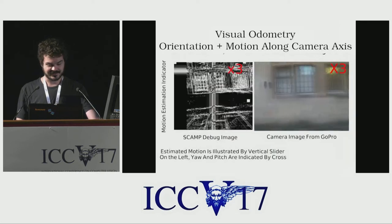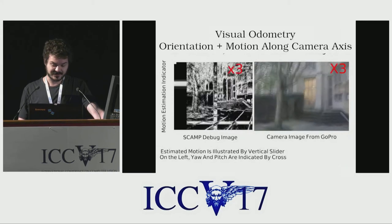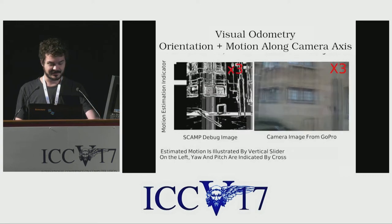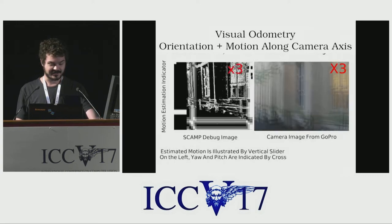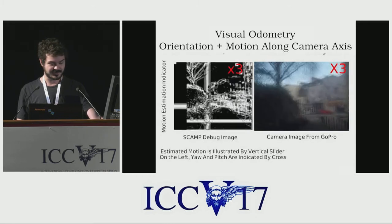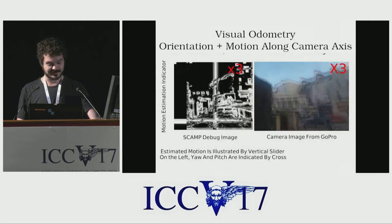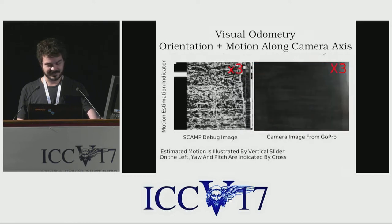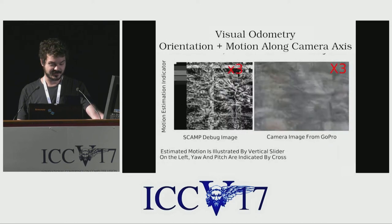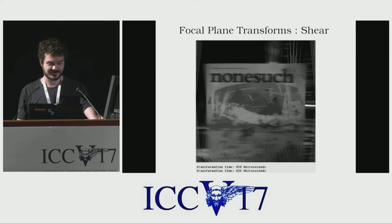We present a visual odometry approach for PPA sensors based on image alignment between the current image and the keyframe. This process estimates the sensor's orientation and forward-backward motion along the camera axis. On the left, we can see the motion estimation indicated by the vertical meter and the Euler pitch estimation indicated by the overlay cross. All processing is conducted on the PPA sensor itself in excess of 500 Hz.